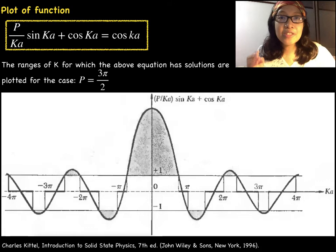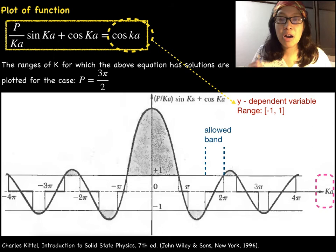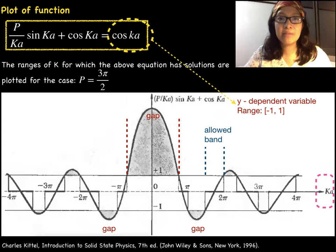Now the left side of the equation is equal to the right side, correct? Recall that the range of cosine x or cosine Ka is from negative 1 to positive 1. Thus, the shaded region are forbidden regions. We can disregard them when determining the range of Ka. So we can indicate these Ka values are allowed bands while these Ka are forbidden bands.